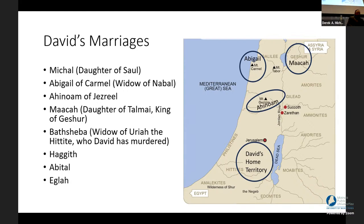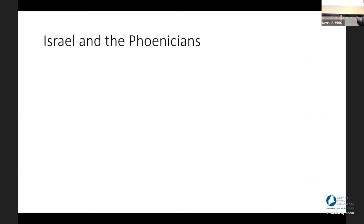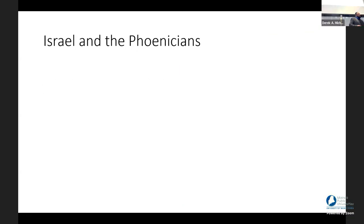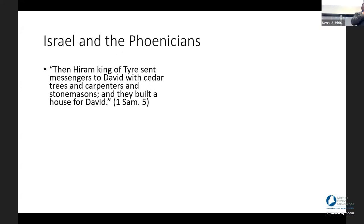David caught Bathsheba taking a bath, had relations with her, got her pregnant, had her husband Uriah killed, and got himself in trouble for that. We also note that David and Solomon had relations with Tyre in Phoenicia. King Hiram of Tyre was an ally of David. The Phoenicians were known as craftsmen, traders, and skilled craft workers — and they had cedar, prized wood for building temples and palaces. When David came to power, he sent messages to Hiram asking for cedar trees, carpenters, and stone masonry. Solomon did the same — requesting cedars and cypress in exchange for food and oil.